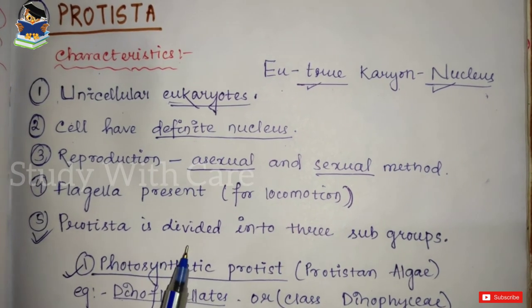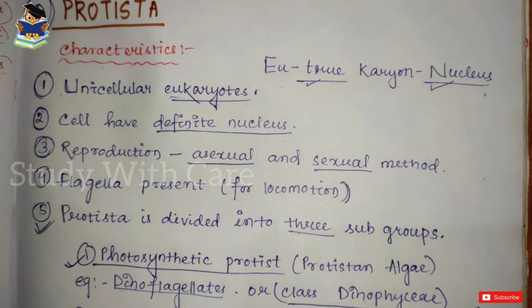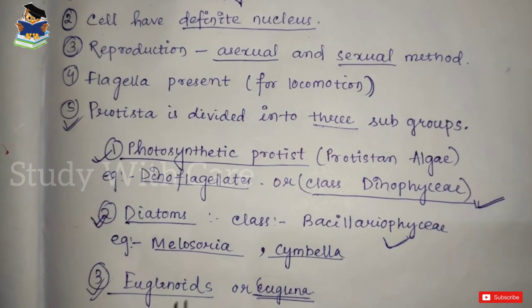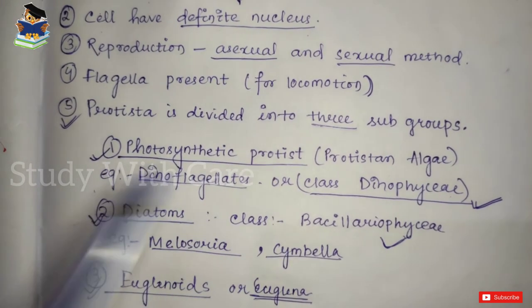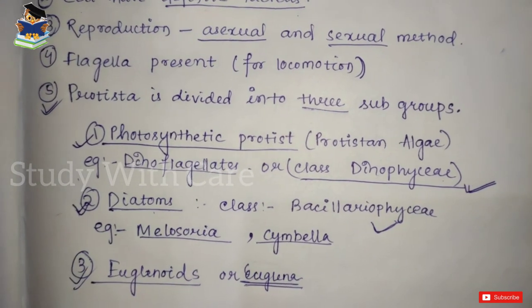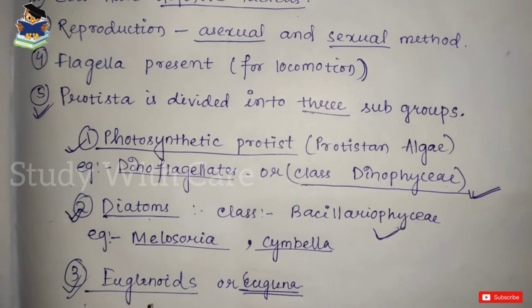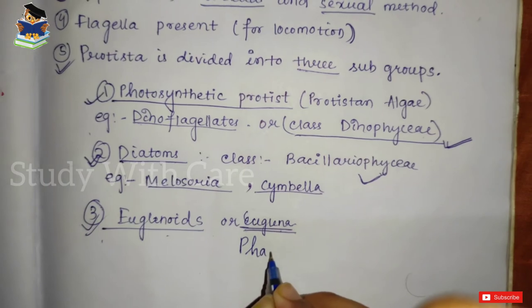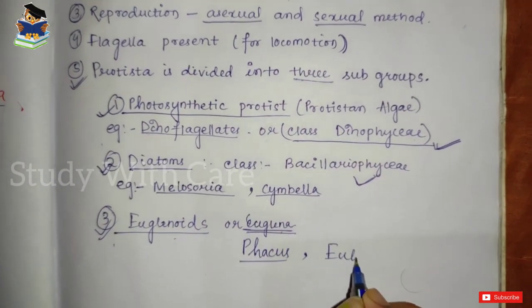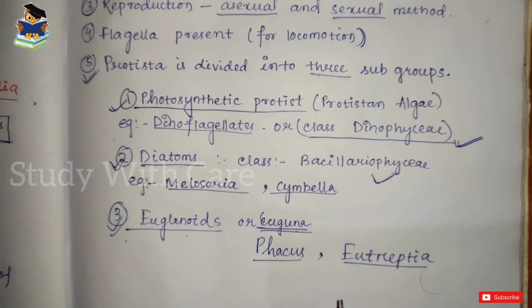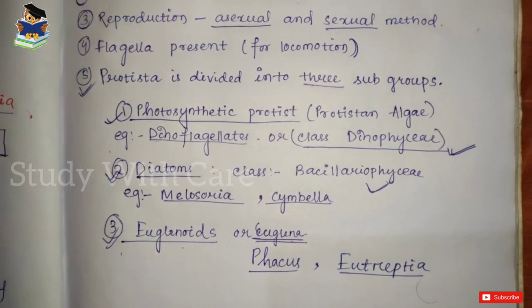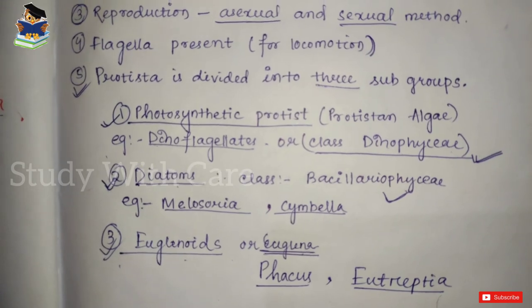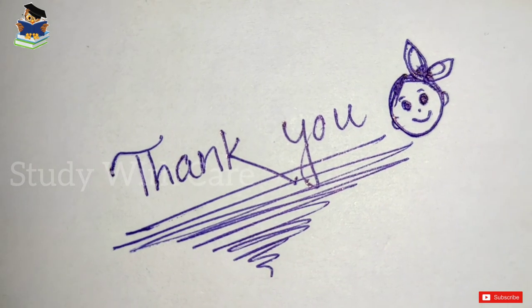Flagella are present. While Monera is divided into two subgroups, Protista is divided into three subgroups: the first is photosynthetic protists, which include dinoflagellates or the class Dinophyceae; the second is diatoms, which include the class Bacillariophyceae; and the third is euglenoids or Euglena — examples include Phacus and Eutreptia. This concludes our discussion of Kingdom Monera and Kingdom Protista. In the next video we will discuss the remaining three kingdoms.